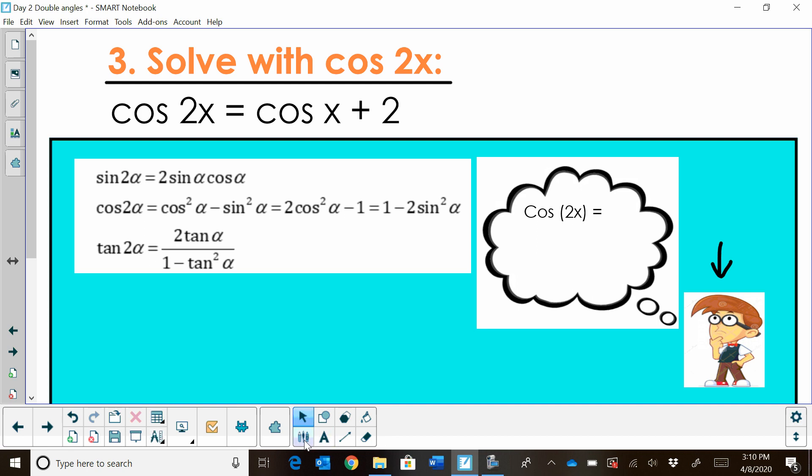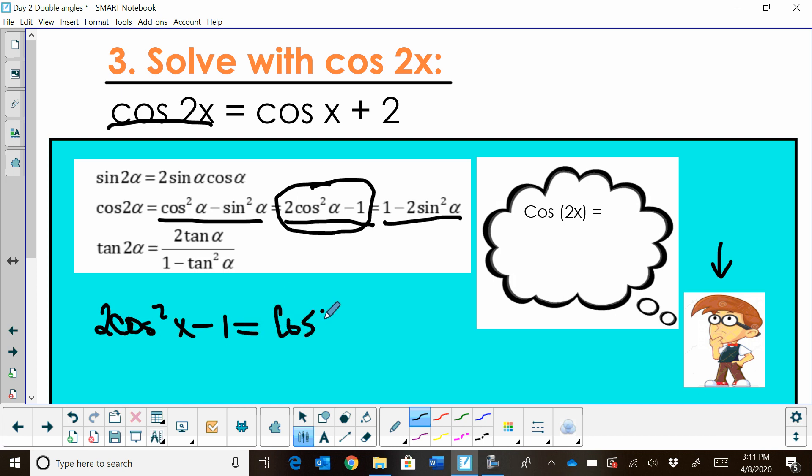Cosine of 2x actually has multiple forms. We can use this form, cosine squared minus sine squared. We can use this form that has 2 cosine squared theta minus 1. Or we can use this third form, 1 minus 2 sine squared. Well, if I replace my double angle with this first one, I'm going to have both sines and cosines. If I replace it with the second one, I will have a cosine squared, but at least it will match this cosine. And then if I replace it with the third one, it's not going to help me because I have a sine squared and I have a cosine in my formula. So my choice is going to be this substitution. So I'm going to plug in 2 cosine squared x minus 1 is equal to cosine x plus 2.